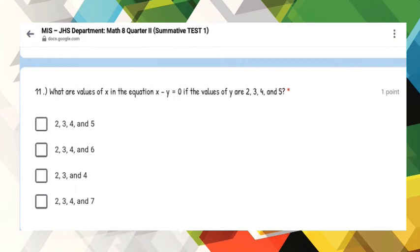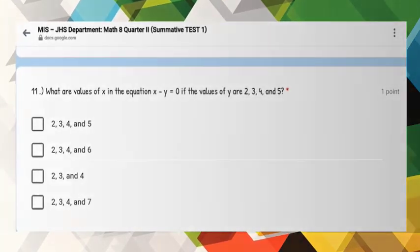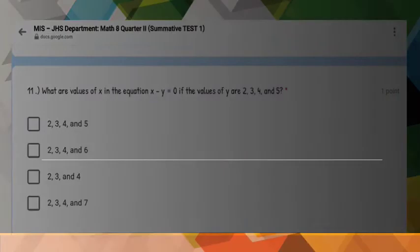Number 11: What are the values of X in the equation X minus Y is equal to 0, if the values of Y are 2, 3, 4, and 5?